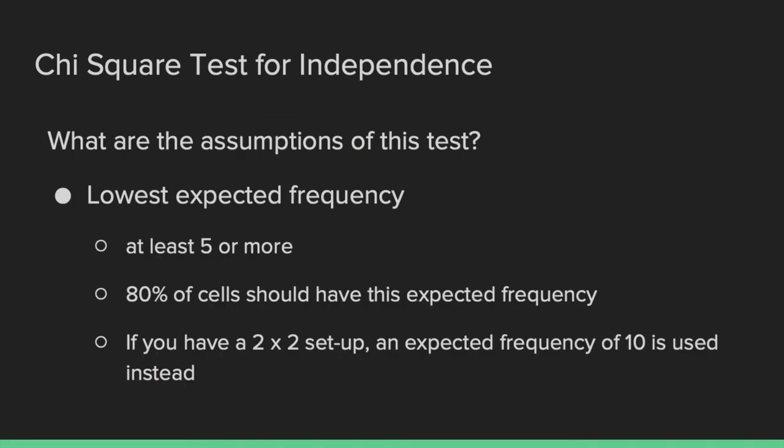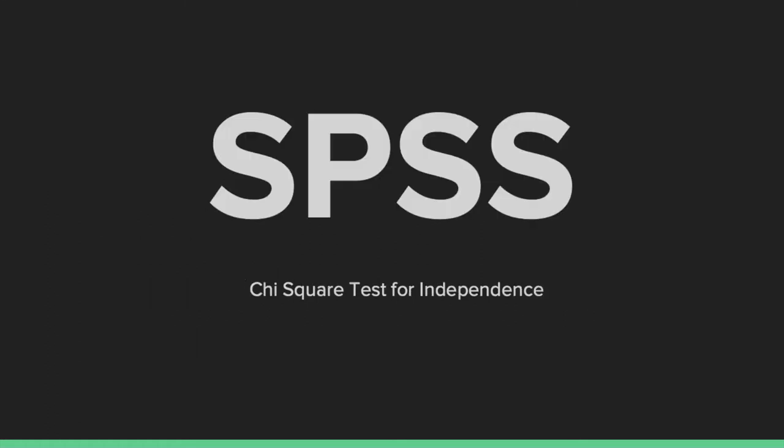There is only one additional assumption for chi-square tests on top of the two general assumptions: the assumption of the lowest expected frequency. Expected frequency is basically how many times you expect to get something — for example, if the chance of being a smoker is 30% and you sample 200 people, how many are going to be smokers? At least 80% of cells should have an expected frequency of at least five. If you violate this assumption, you're at risk of a type one error. This assumption is even stricter with two-by-two setups, which require a minimum expected frequency of at least 10. Now we're going to head over to SPSS to learn how to run a chi-square test for independence.